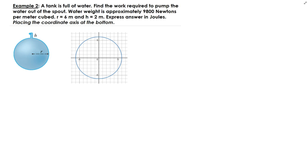In this lesson we're going to find the work required to pump the water out of the spout, given that the tank is full. The tank has a radius of six meters and the height of the spout is two meters. We're going to approach this in a slightly different way — in example one we put the axis in the center of the tank, but in this example we're going to put the coordinate axis at the bottom.